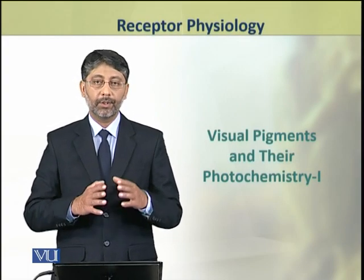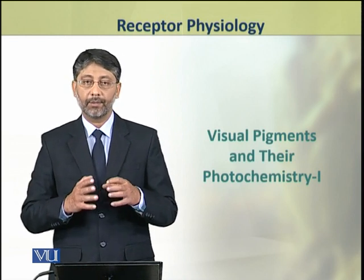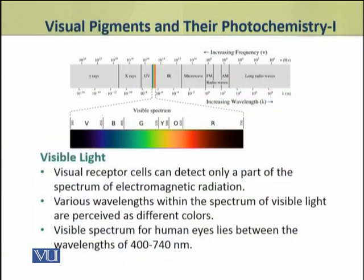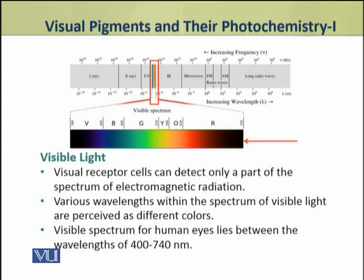In this topic we shall discuss the visual pigments and their photochemistry. The visual receptor cells can detect only a part of the spectrum of electromagnetic radiations. The various wavelengths within the spectrum of visible light are perceived as different colors, and the visible spectrum has been divided into various colors. The visible spectrum for human eyes lies between the wavelengths of 400 to 740 nanometers.